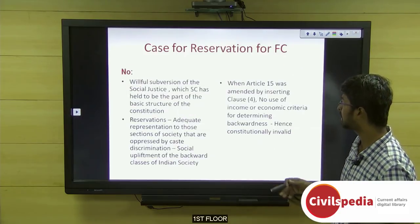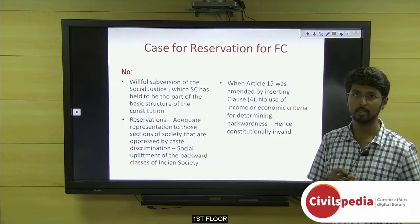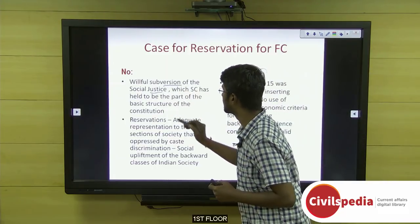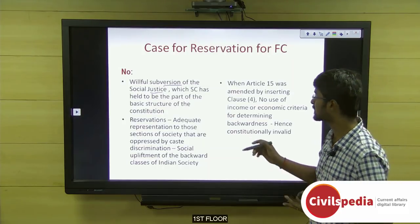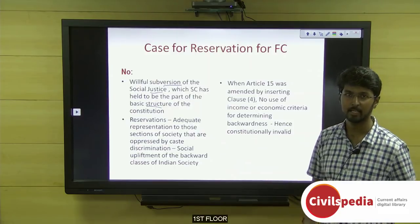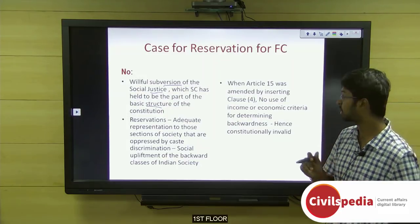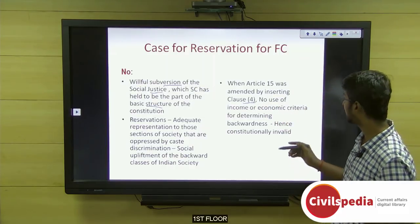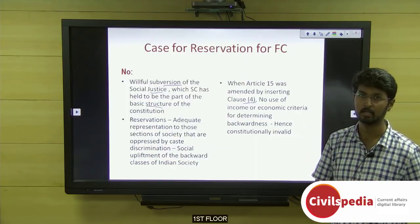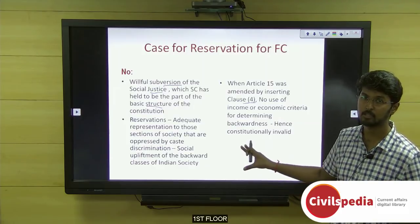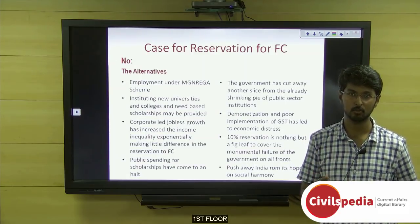The second author, who opposes reservation for forward castes, also speaks on social justice but calls it a willful subversion of social justice. He argues the Supreme Court has held that social justice is a basic structure of the constitution, and this move tends to subvert that. Reservations are for those who are socially and educationally backward, not economically backward. When Article 15(4) was amended, it discussed social and educational backwardness — it did not bring in an income criteria. Therefore this author holds the reservation is constitutionally invalid.